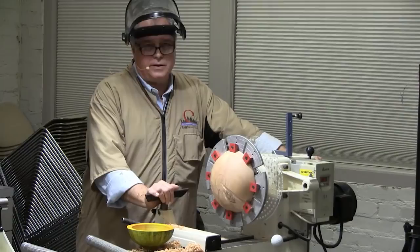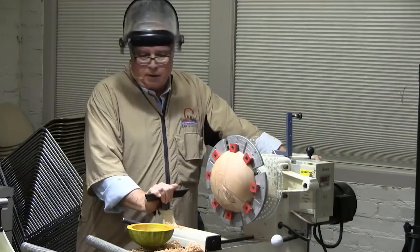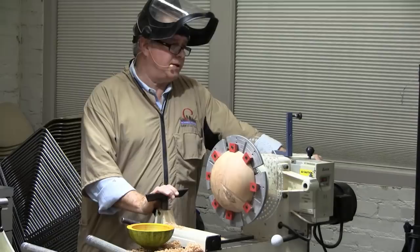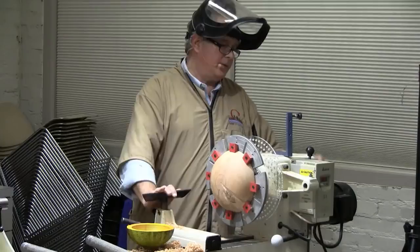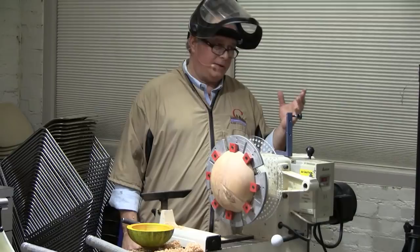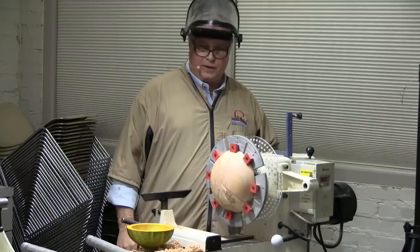My Powermatic 3520B doesn't have indexing on it. So I use this. And my 4224 Powermatic, it has an indexing wheel I had made put on it. The guy that makes all the aluminum tools, you see him at SWAT, he makes a lot of different tools.